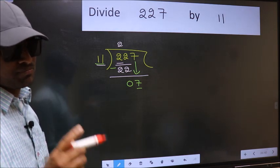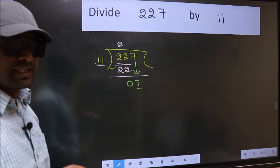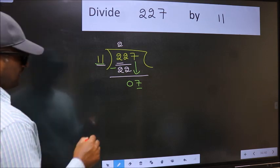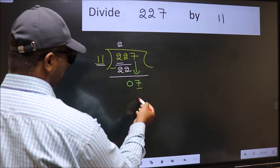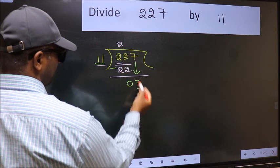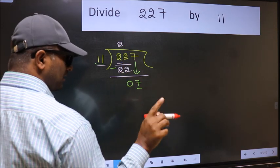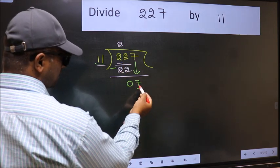You should not do. Instead, what you should think of doing is, which number should we take here. If I take 1, we will get 11. But 11 is larger than 7.